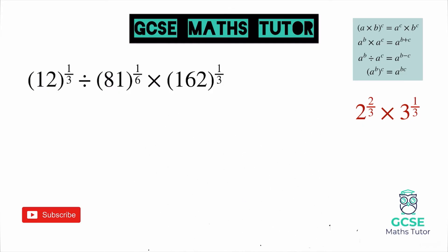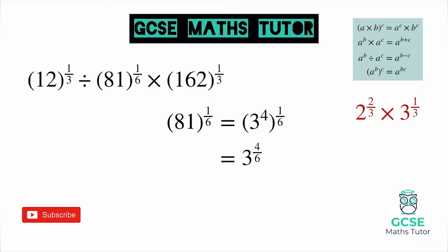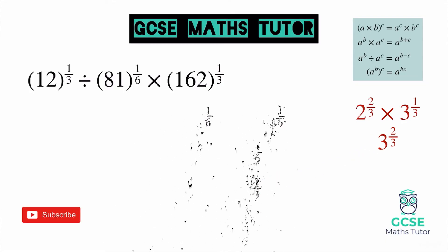Now let's look at 81 to the power of a sixth. Now 81 is actually a power of 3 — you could write 9 times 9, then 3 squared times 3 squared, or you may already know that 81 is 3 to the power of 4. So we write 3 to the power of 4 all to the power of one sixth. Multiplying out those powers gives us 3 to the power of 4 sixths, and that fraction simplifies to leave us with 3 to the power of 2 thirds. We've managed to simplify that down to base number 3, so we take that out and set it aside.